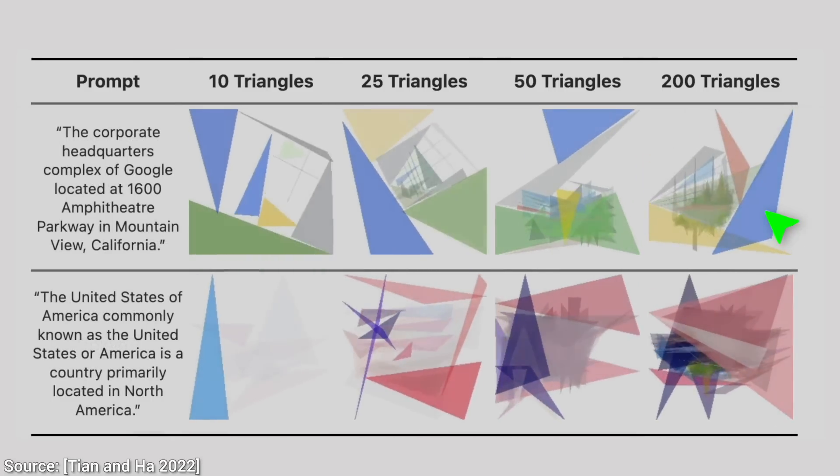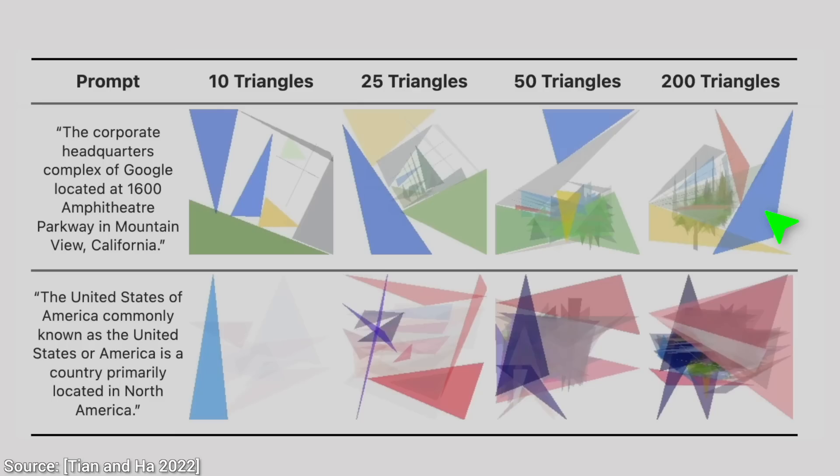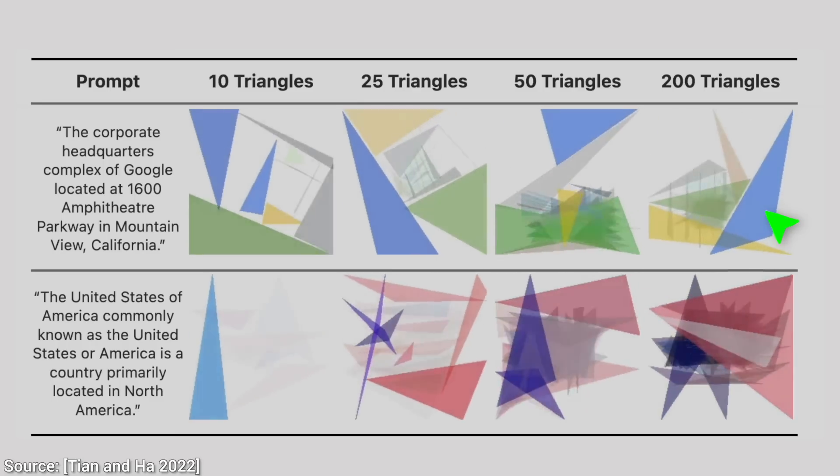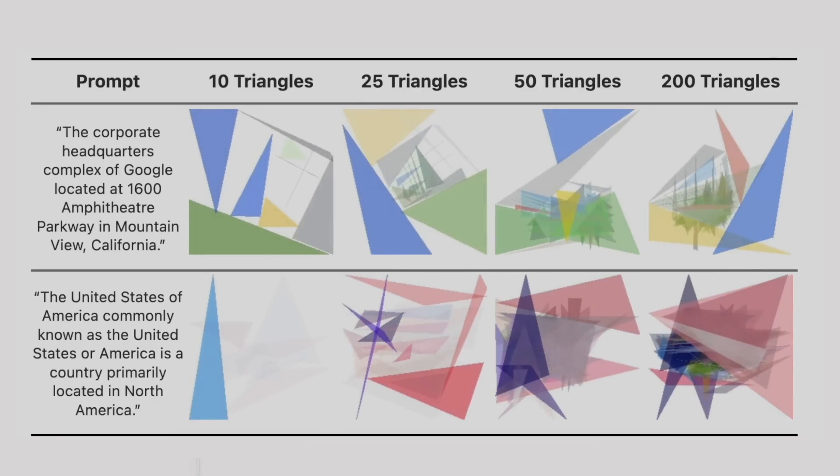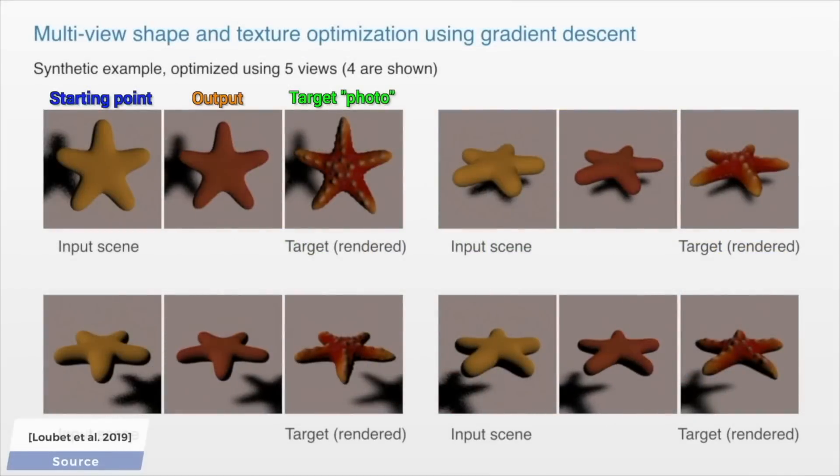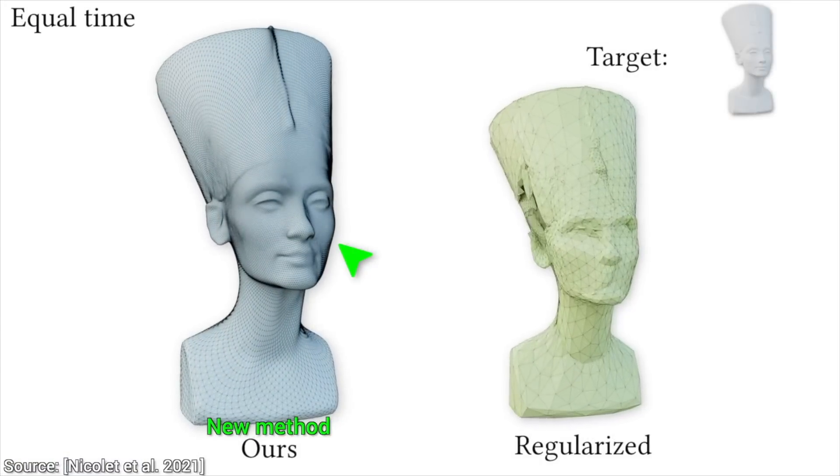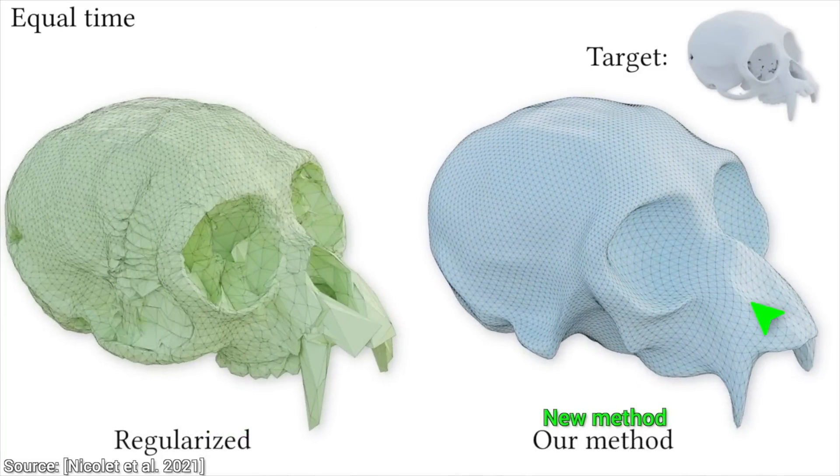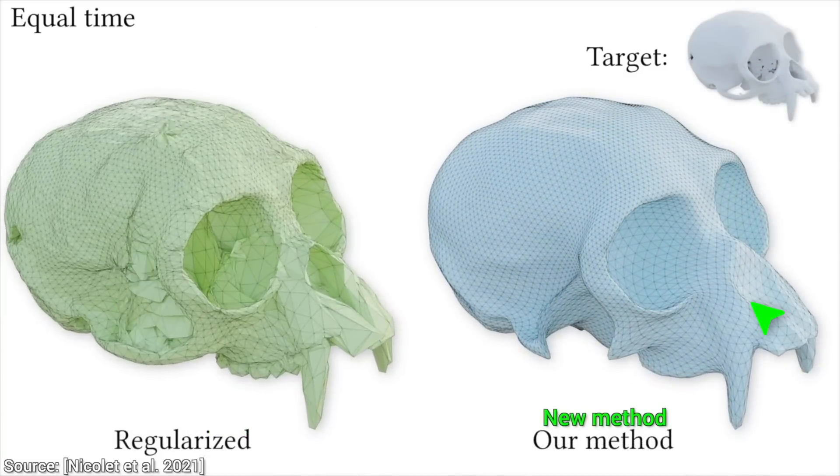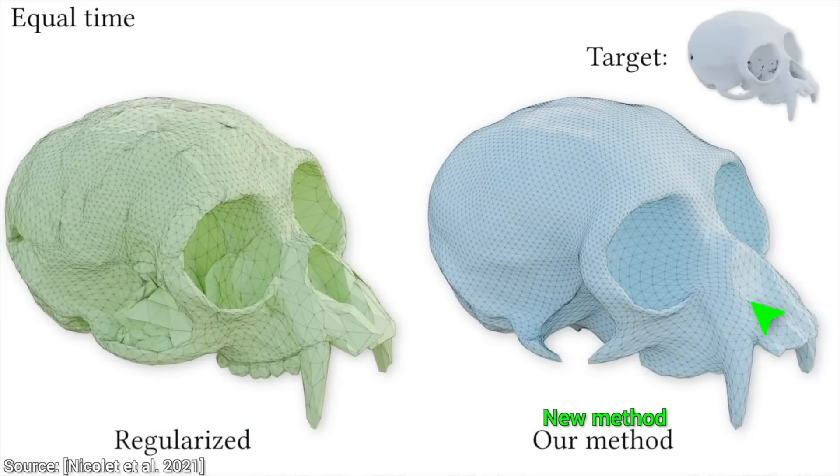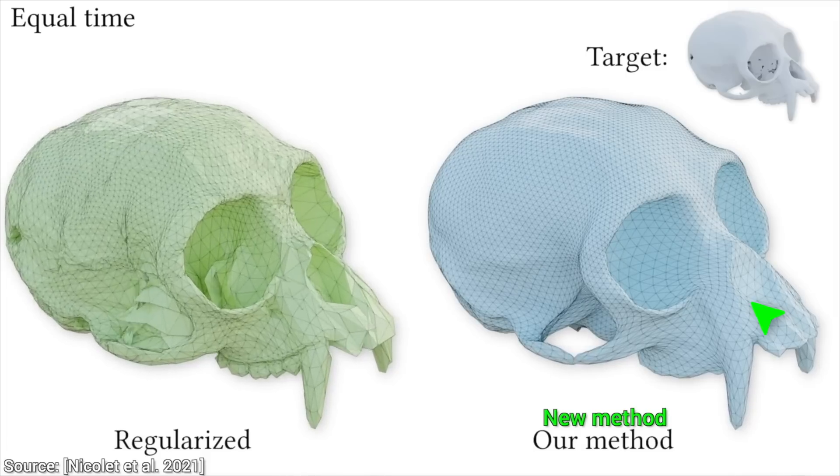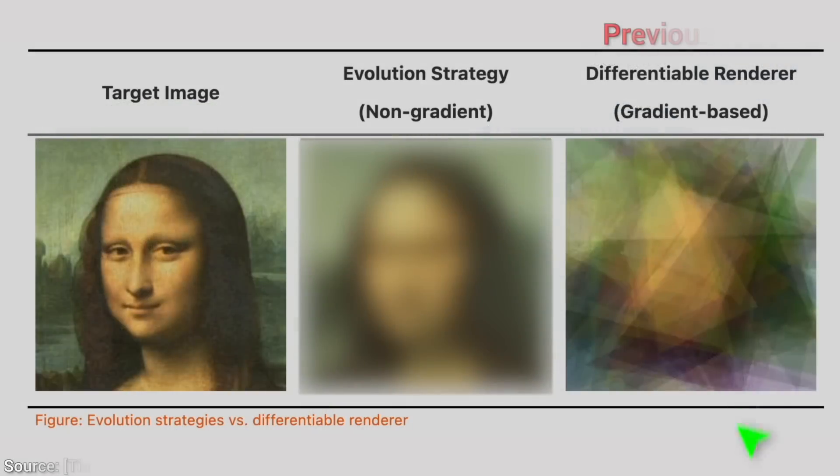And here comes surprise number two. The authors claim that it is even faster than a differentiable renderer. These are really powerful optimization techniques that can even grow this beautiful statue out of nothing, and do all that in just a few steps. So, claiming that it is even faster than that, well, that is very ambitious. Let's have a look.